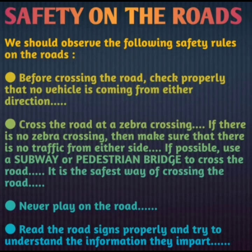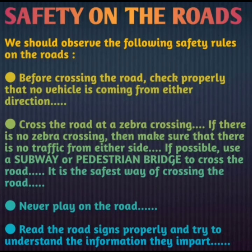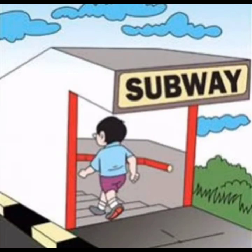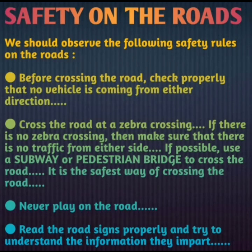Hume generally road zebra crossing se hi cross kana chahiye. By chance agar zebra crossing nahi hai toh aapko bhoat zada zaruri hai ki aap first point follow kare — check to your left, then right, and then left again, and then cross. In big cities, subways and pedestrian bridges are available. A subway is a passage under the road, and a pedestrian bridge is a bridge over the road for people on foot. If possible, use a subway or pedestrian bridge to cross the road, as it is the safest way.